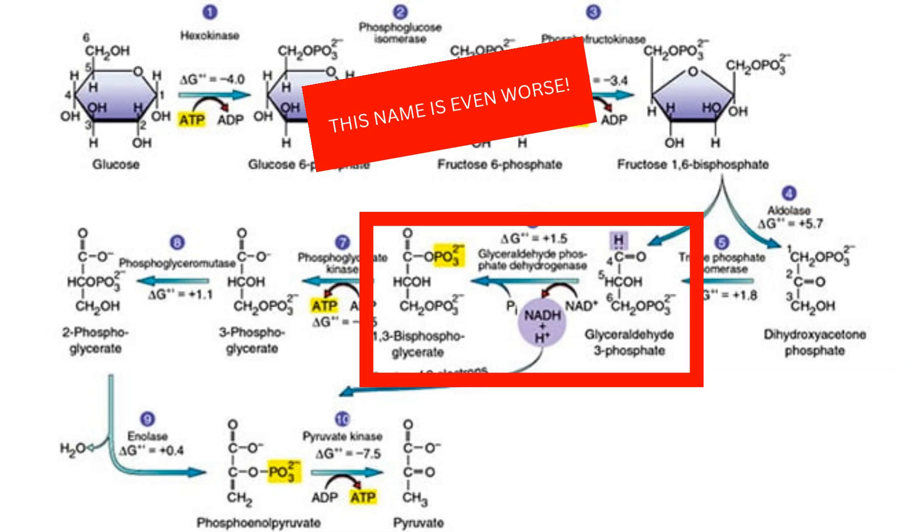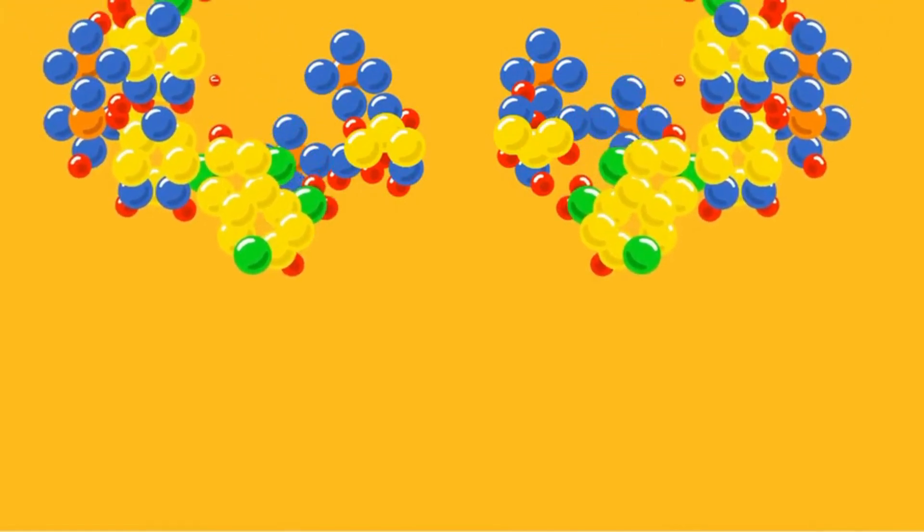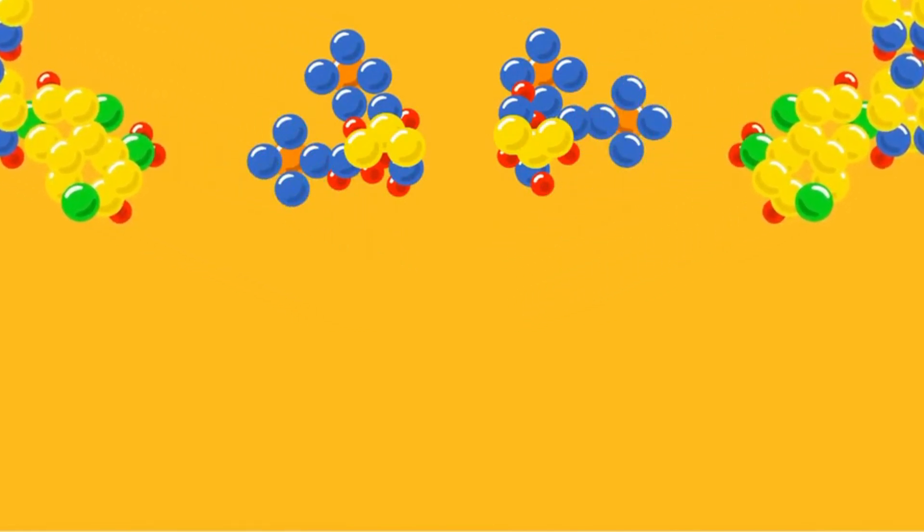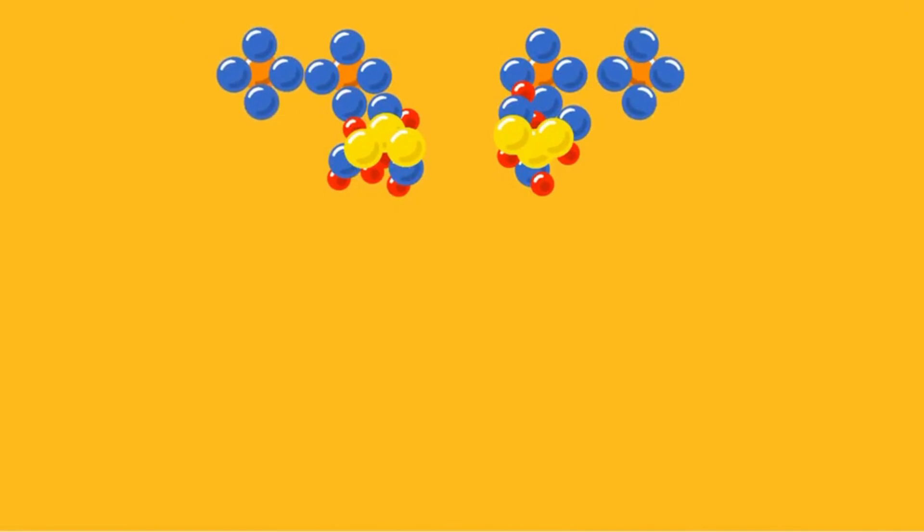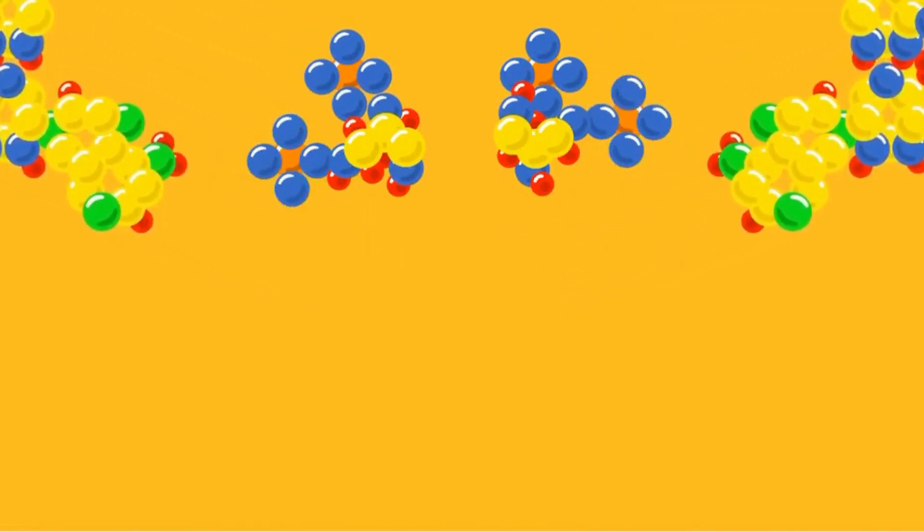What then happens is one of our phosphate groups merges with our glyceraldehyde-3-phosphate to form 1,3-biphosphoglycerate. In this step, an NAD+ is reduced to an NADH and a proton.